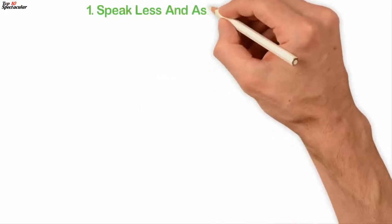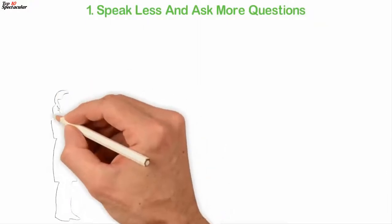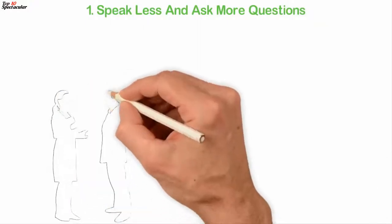1. Speak less and ask more questions. One of the most important social skills you can build is learning to speak less and ask questions more.